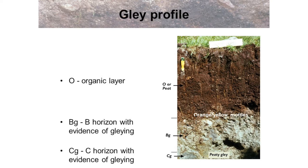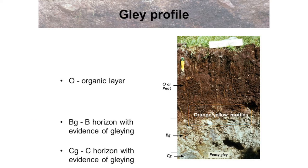This slide shows the profile of a gley soil — in this example a peaty gley soil. The top horizon is an organic layer. The B horizon is a BG horizon showing evidence of gleying, so it gets the G added. Note the presence of yellow-orange mottles, which means the soil is not permanently waterlogged — there are periods when oxygen is available. The C horizon is a CG horizon, also showing evidence of gleying.